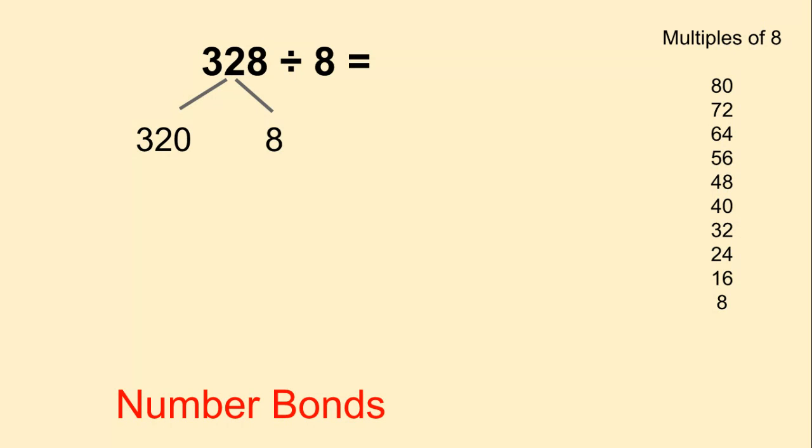How many 8s fit in 320? 40 of them. Again, 8 times 4 is 32. So 8 times 40 is 320. And of course there's one 8 that fits in the 8. So when I add those together, I realize that 328 divided by 8 equals 41. 8 times 41 equals 328.